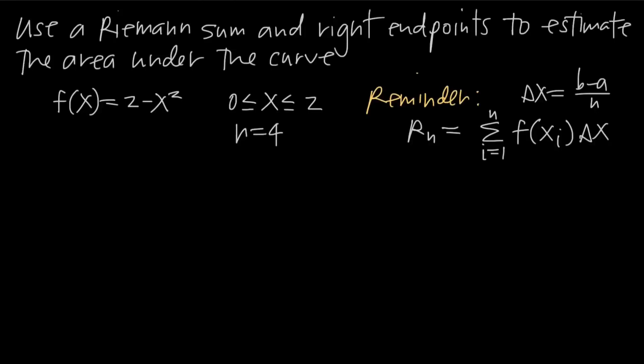In this video, we're talking about how to use Riemann sums to estimate the area under a curve. In this particular problem, we're going to be using right endpoints. Remember that with a Riemann sum, we can use left endpoints, right endpoints, or midpoints. This is going to be an example where we use right endpoints, and we've been given the function f equals 2 minus x squared.